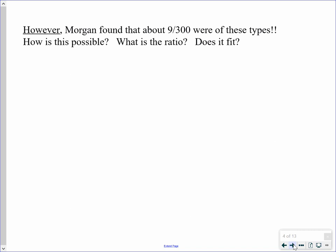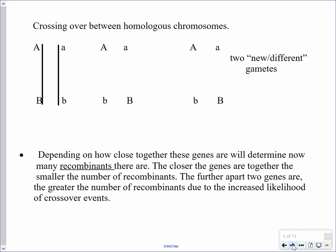This is what Thomas Hunt Morgan did in the early part of the 20th century. What he found is that those genotypes we didn't predict actually did show up in the offspring — 9 out of 300 Drosophila. So we confirmed that A and B are physically attached on the same chromosome, but how is it possible to get some other genotypes in the gametes? And what ratio does this fit into? It doesn't fit any of the standard two-trait cross ratios. So where do these numbers come from?